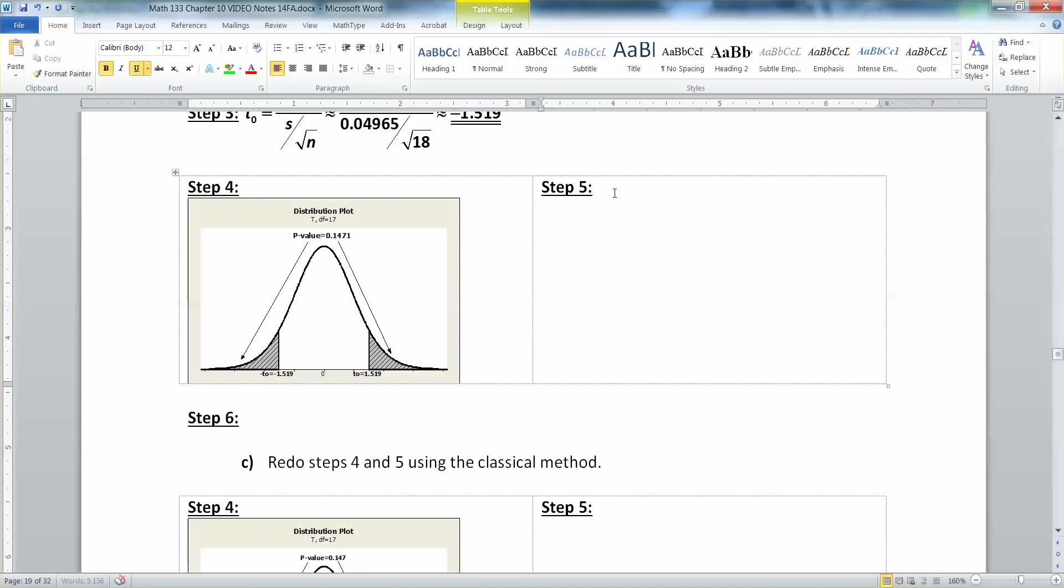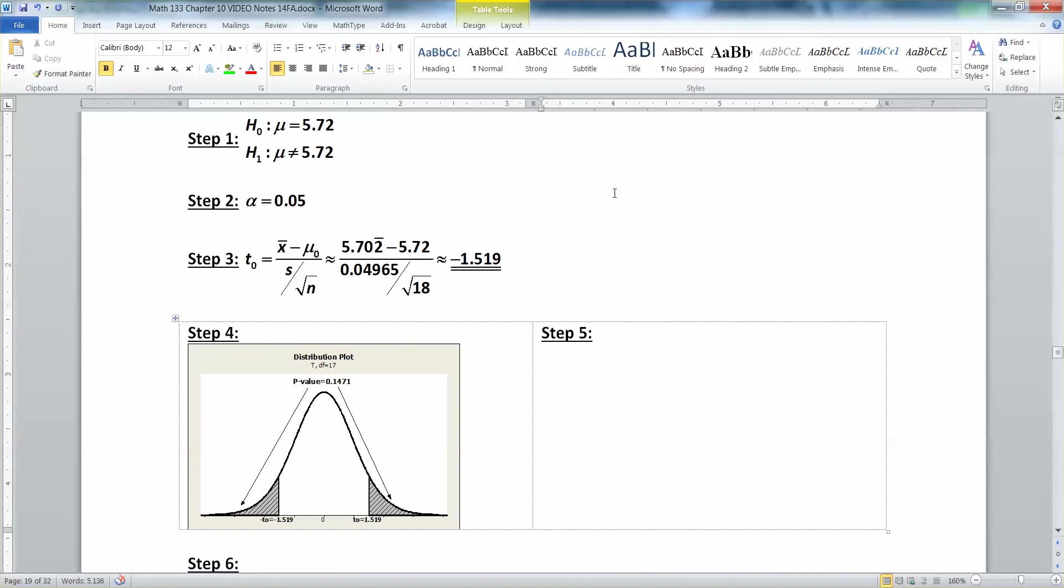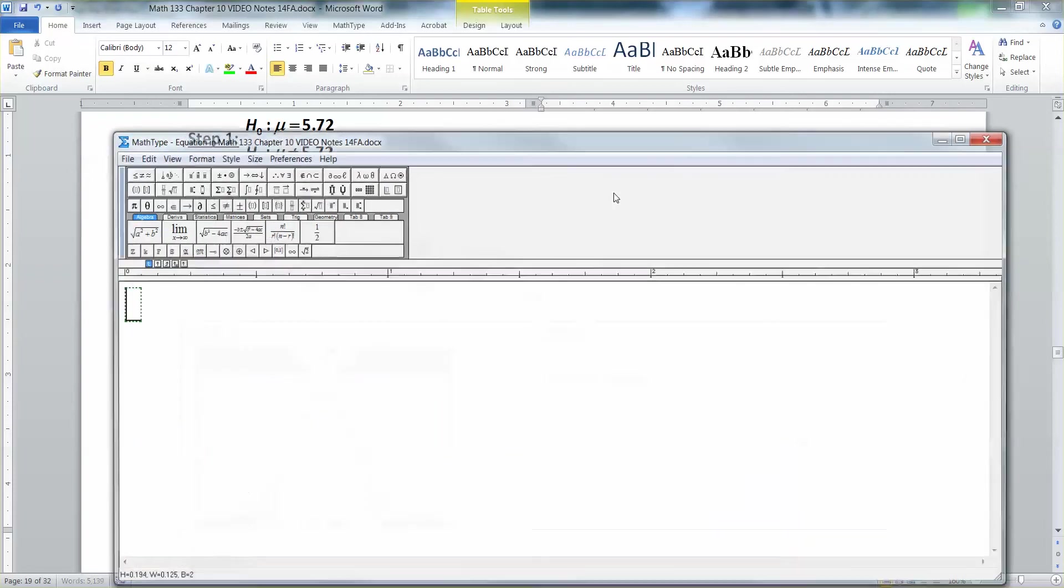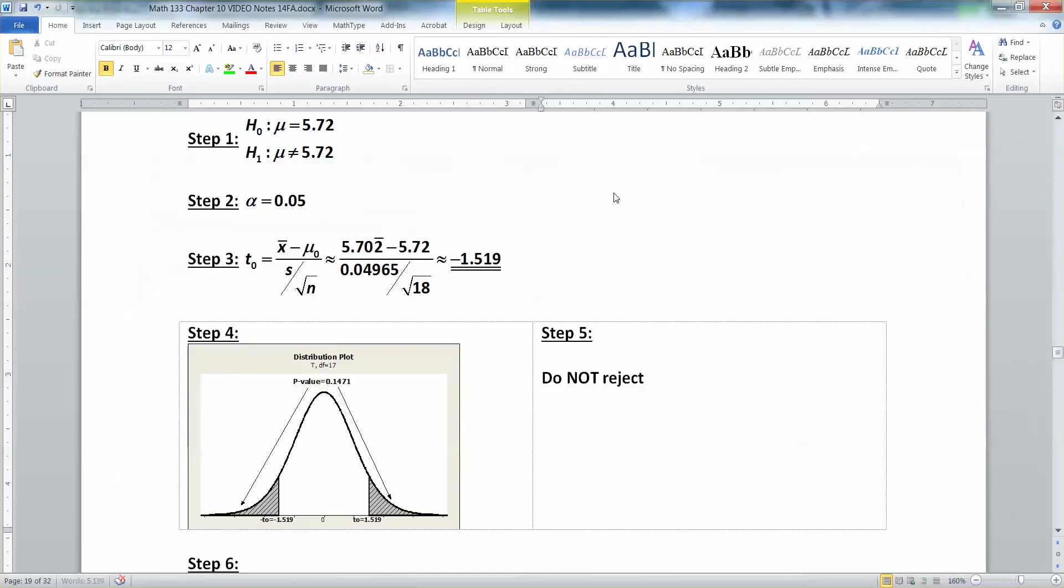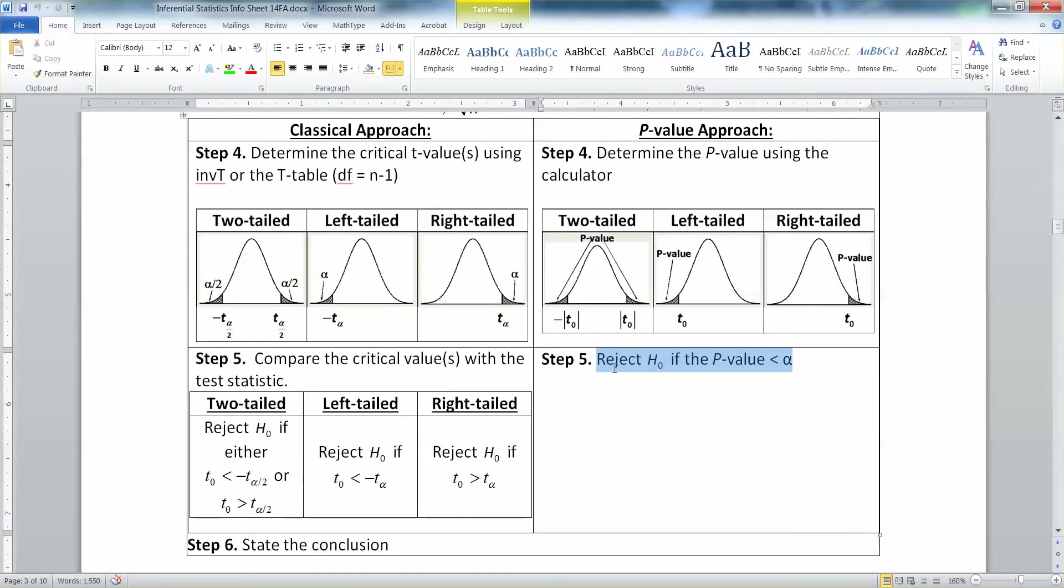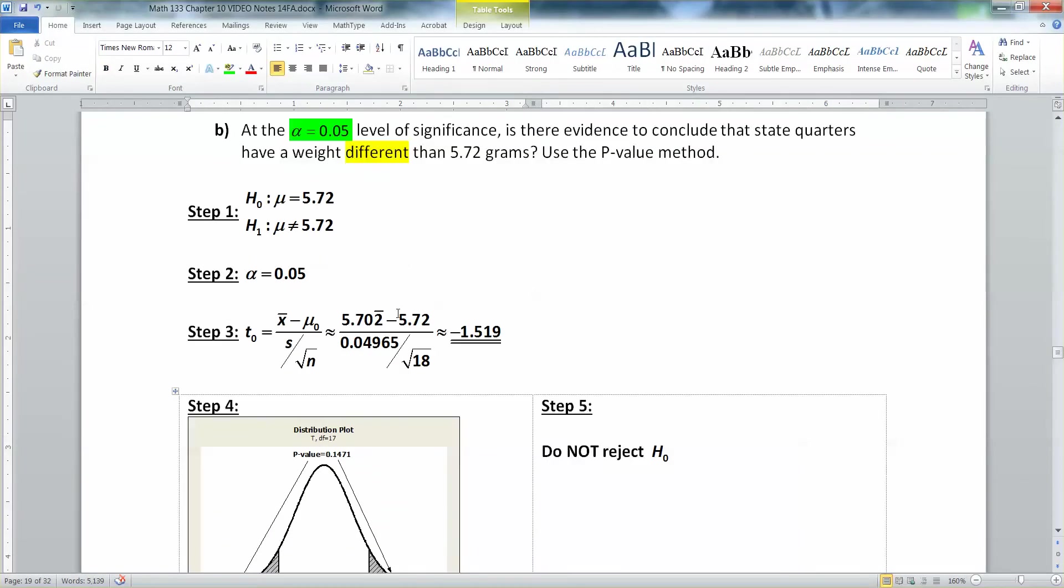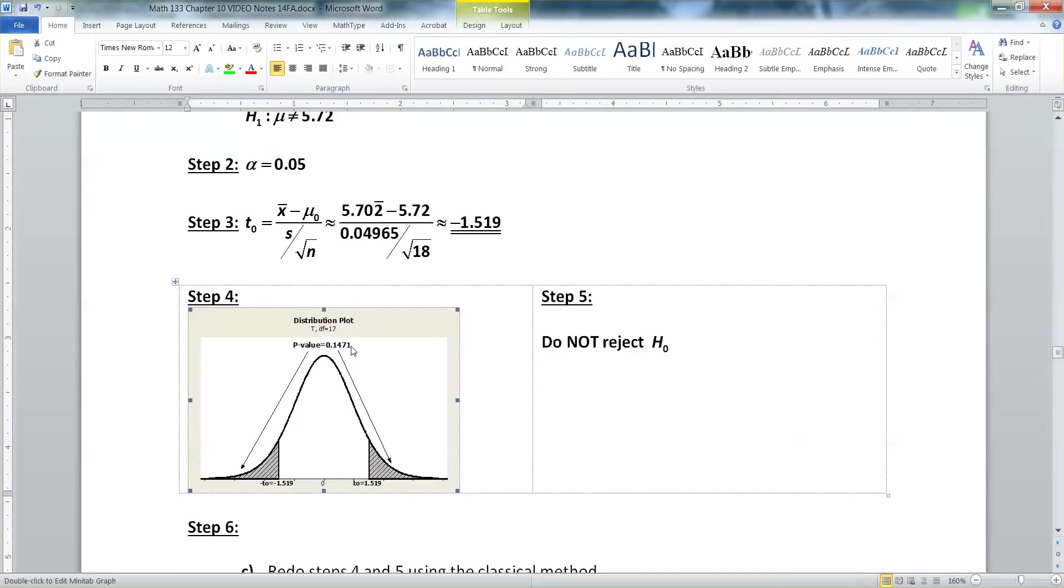All right. So now we have to make a decision. Are we going to reject or not? And the answer is we are not going to reject. So do not reject h0. Now why? Well, because you reject when your p-value is less than your alpha. If you look at the inferential statistics sheet, it says you reject h0 when your p-value is low. You know something's fishy when you have a low probability. So if we look at our problem, we don't have that low of a probability. Our p-value is 0.1471. And remember the p-value is obtained just as a little note. Note p-value from the t-test. So you get it from your t-test output in the calculator.